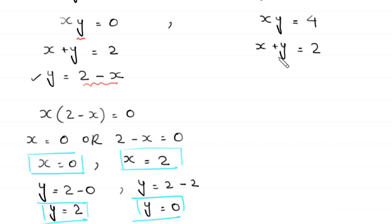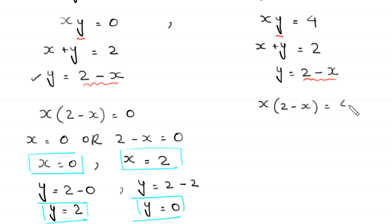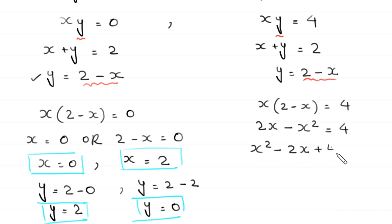Now we solve the second system: x plus y equals 2 and xy equals 4. From x plus y equals 2, we get y equals 2 minus x. Substituting into xy equals 4: x times (2 minus x) equals 4, so 2x minus x squared equals 4. Rearranging gives x squared minus 2x plus 4 equals 0. This quadratic is not factorable, so we use the quadratic formula.